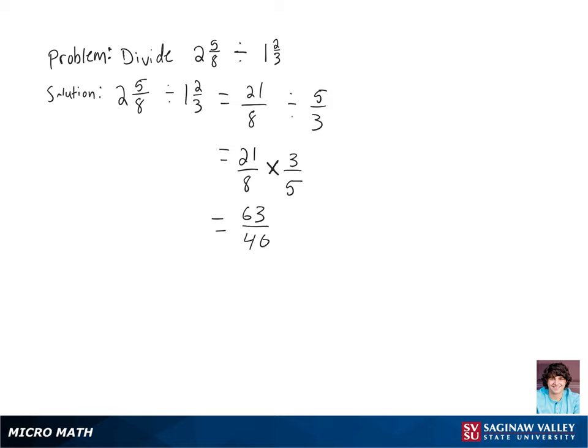Now we're going to rewrite this fraction as a mixed number by doing long division. So 63 divided by 40, 40 goes into 63 once, subtract 40 from 63, and we're going to be left with a remainder of 23, so we get 1 remainder 23, which makes our final answer in mixed number form 1 and 23 over 40.